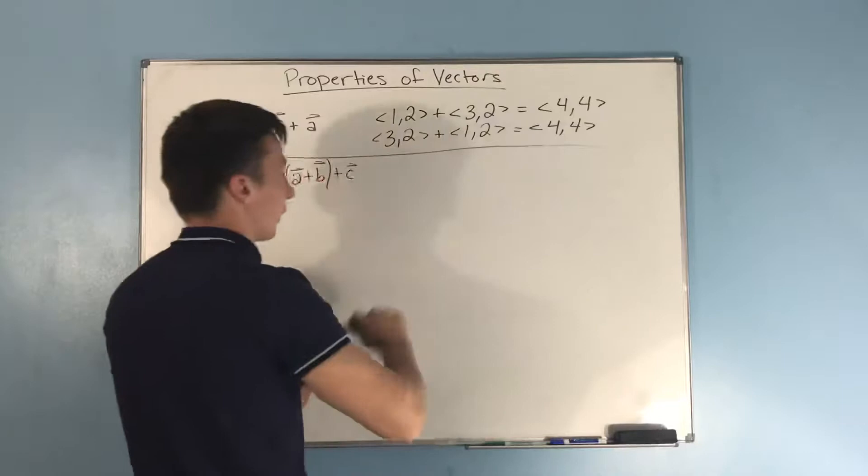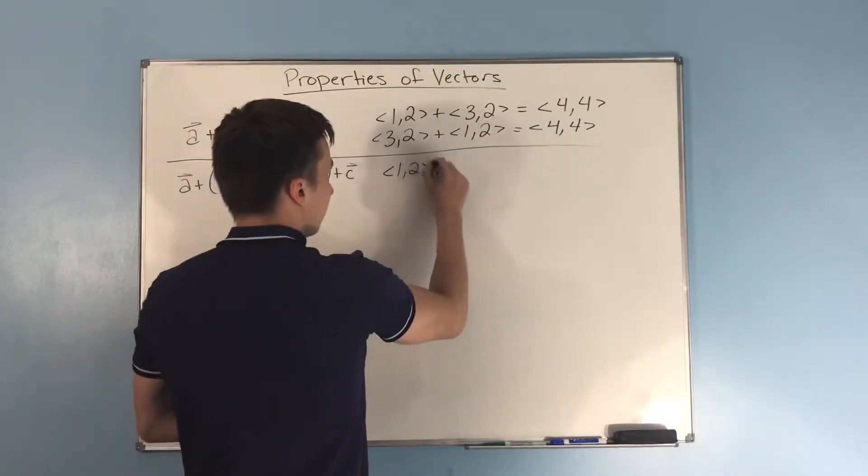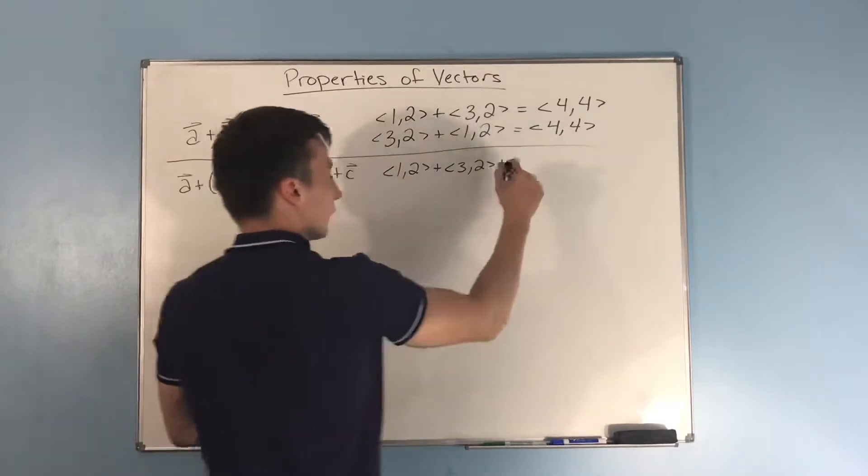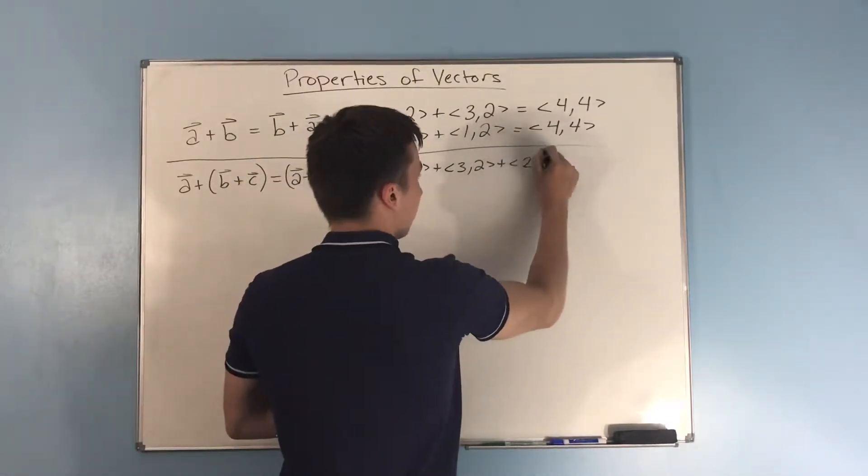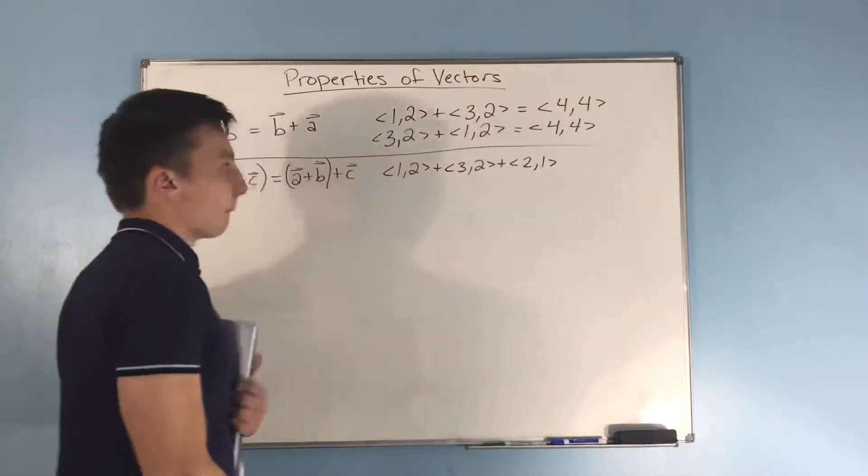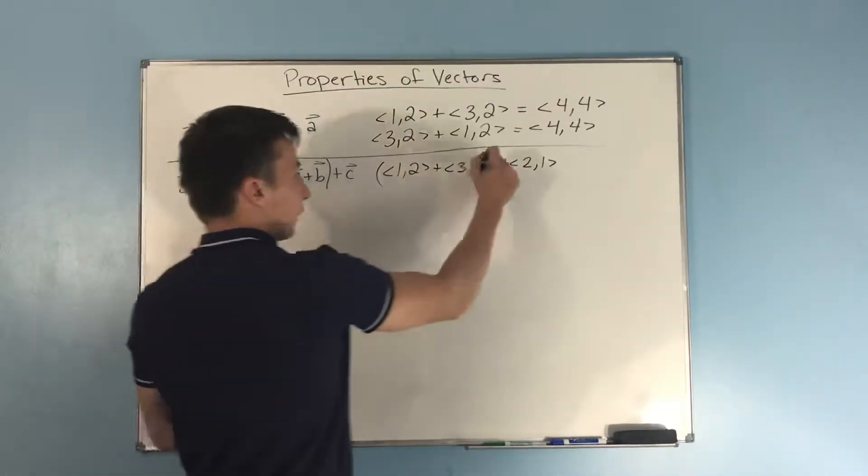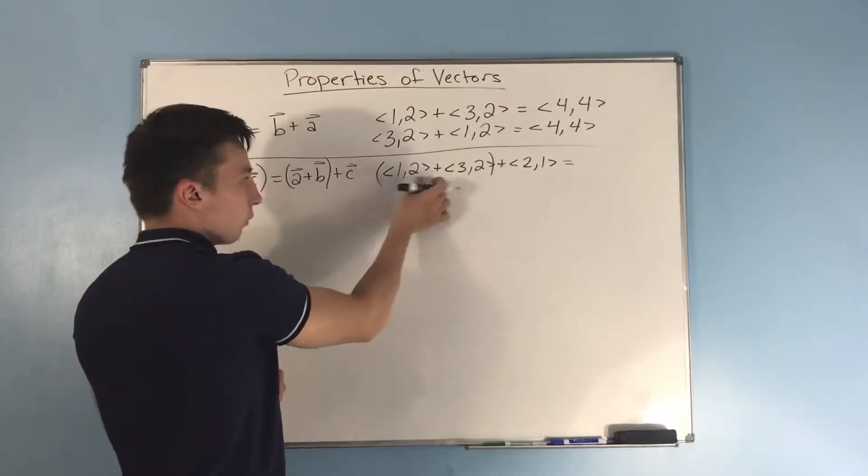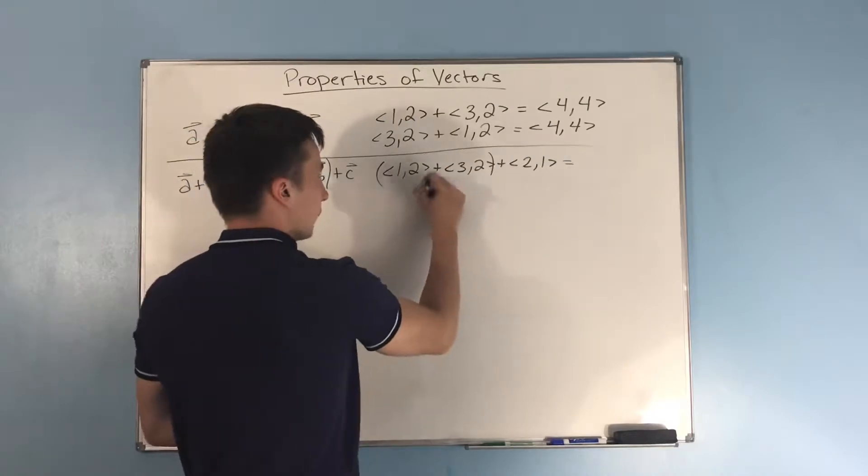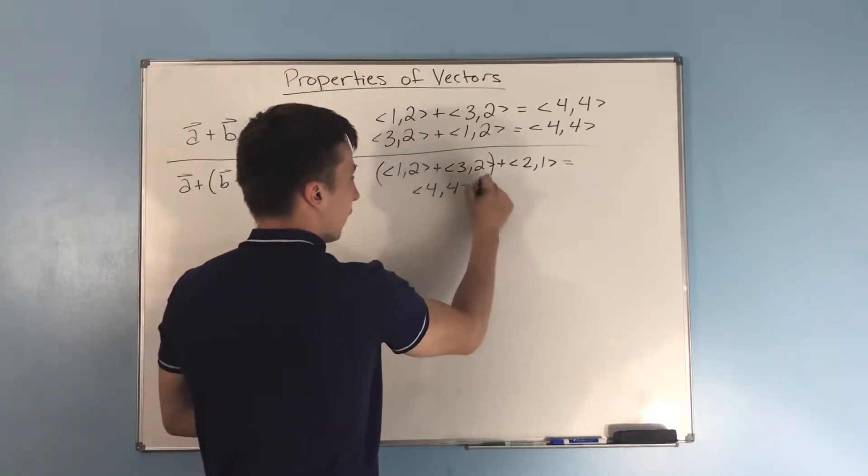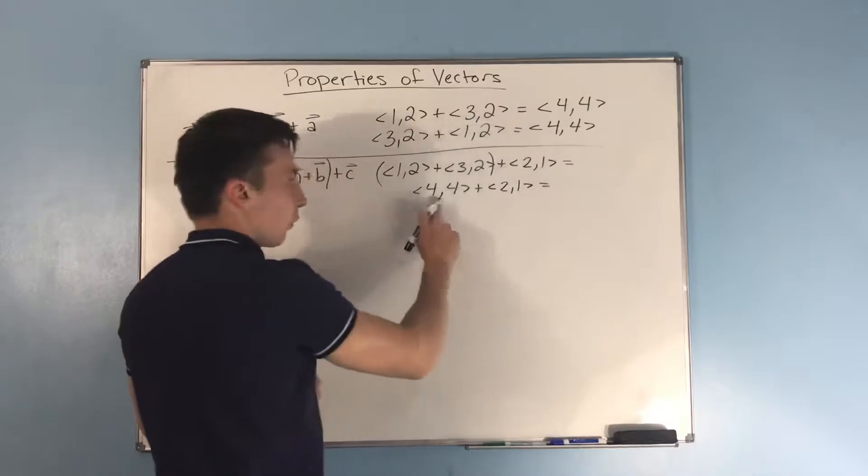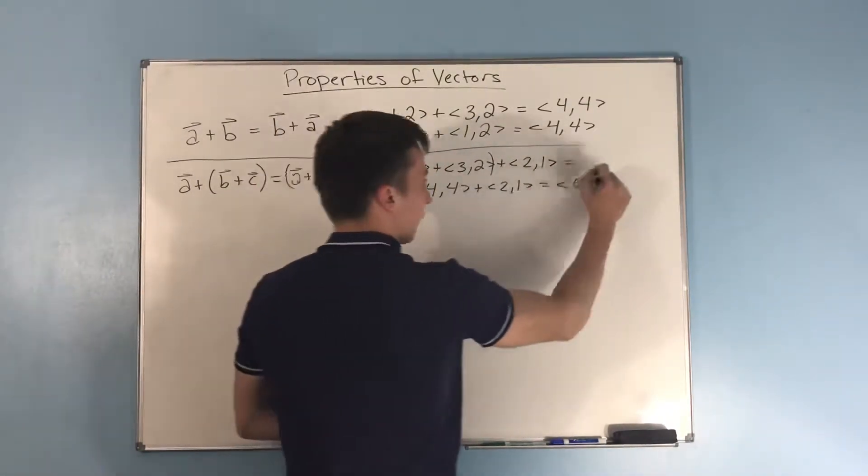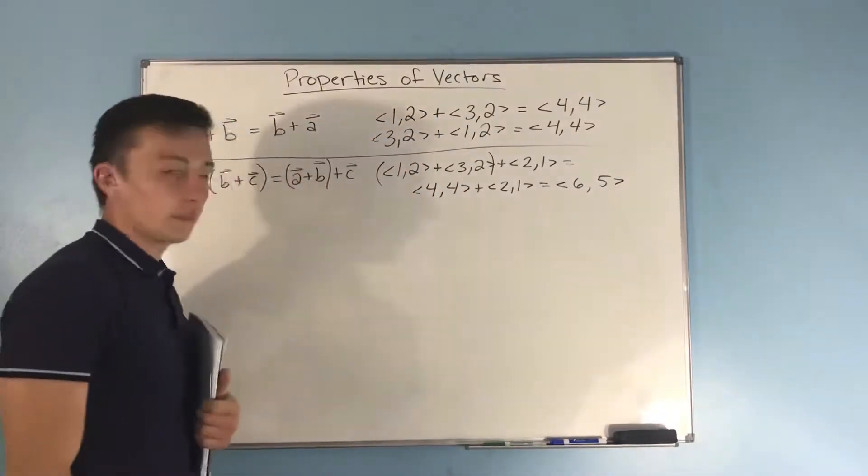And I'll even show you an example here. Let's say that we have 1,2 plus 3,2 plus 2,1. Let's say that we're going to do these first. Well then if we do those first, what we get is 1,2 plus 3,2 is 4,4. And that plus 2,1 is going to be 4 plus 2 is 6, and 4 plus 1 is 5.